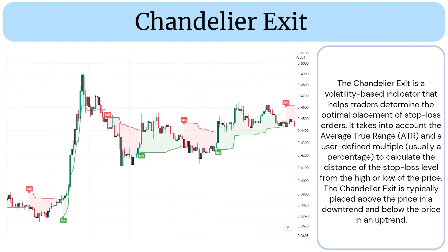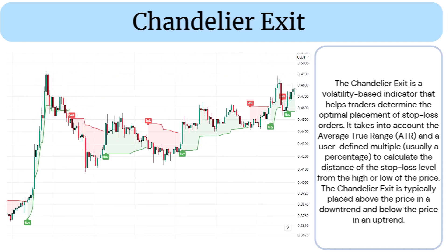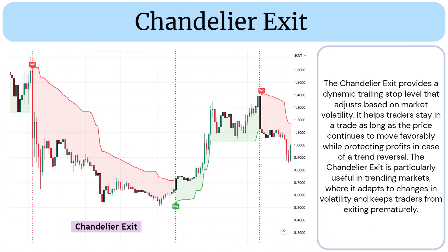The Chandelier Exit is typically placed above the price in a downtrend and below the price in an uptrend. It provides a dynamic trailing stop level that adjusts based on market volatility, helping traders stay in a trade as long as the price continues to move favorably while protecting profits in case of a trend reversal.